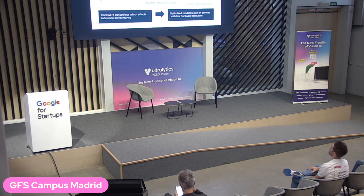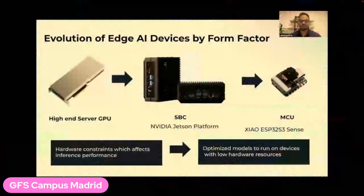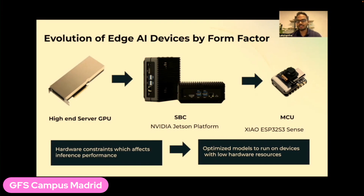Talking about the evolution of edge devices — we have high-end server GPUs like the NVIDIA A100 at the top. If you want to run AI at the edge, you can use platforms such as the NVIDIA Jetson, or small MCUs such as the XIAO ESP32 S3 Sense. The problem is hardware constraints decrease inference performance. But now we have optimized models especially to run on low-power devices, where you can get decent inference performance on these tiny devices as well.